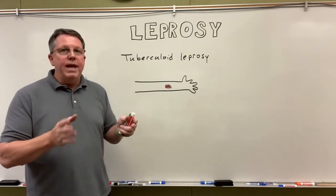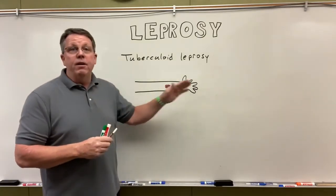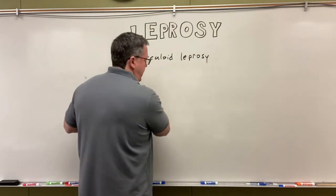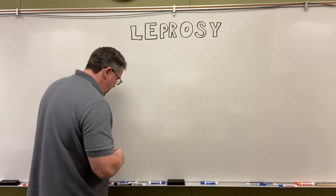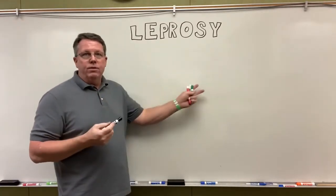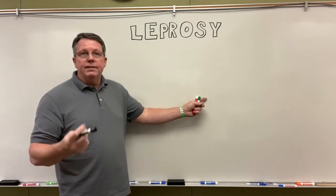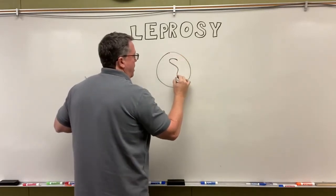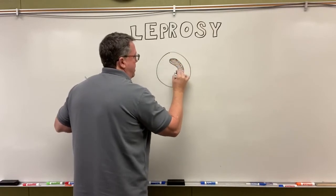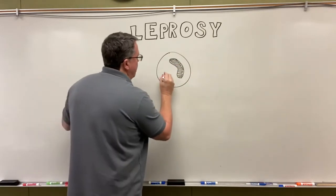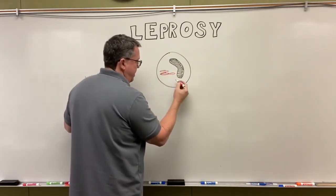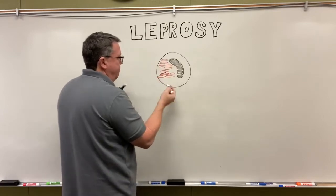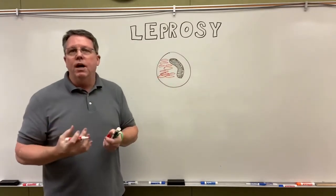Nobody knows exactly how the disease will progress. Someone with a healthy immune system may fail to fight it off, and it can progress to lepromatous leprosy. In the lepromatous type, the mycobacterium multiplies inside macrophages. Because the lysosome couldn't attack it, it starts to multiply in the skin, causing papules or raised areas of skin, especially on the face.